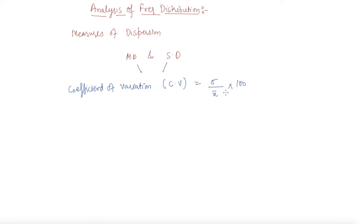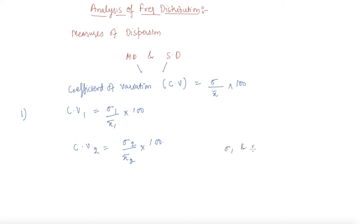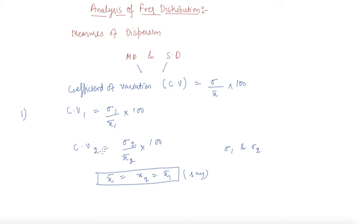If we are given two frequency distributions, Cv1 = (σ1 / x̄1) × 100 and Cv2 = (σ2 / x̄2) × 100. It is clear from these two equations that the two Cv values can be compared on the basis of σ1 and σ2 only, because if the two frequency distributions have the same mean, we can compare the two coefficients of variation on the basis of their standard deviations only. This is a very important result.